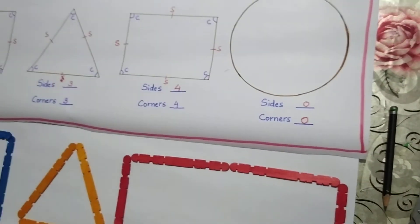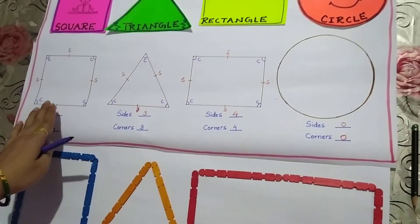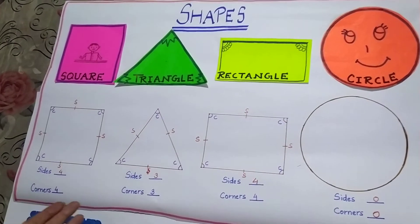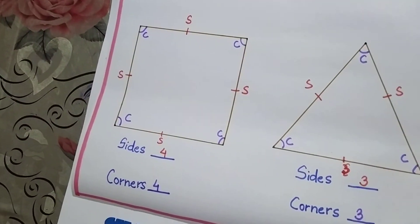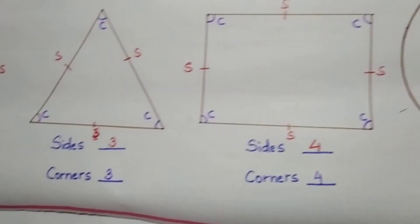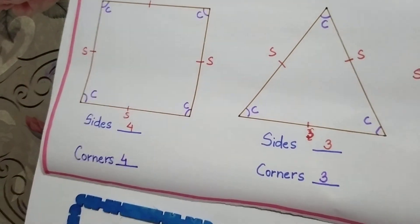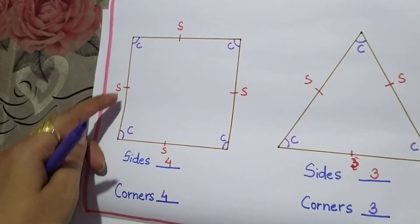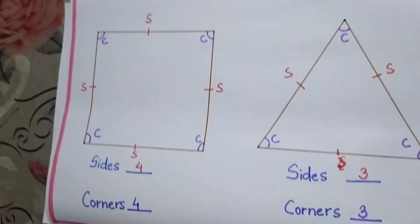So dear children, you all must have understood now. These are the figures and these are the number of sides and corners. So whenever you have to find the sides, count how many straight lines there are. And in any figure, where two straight lines come and meet, that will make their corners.